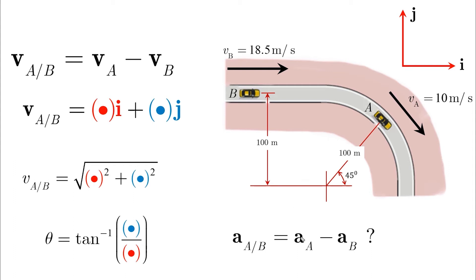Let's say that B is slowing down. So it will have an acceleration in the negative i direction.